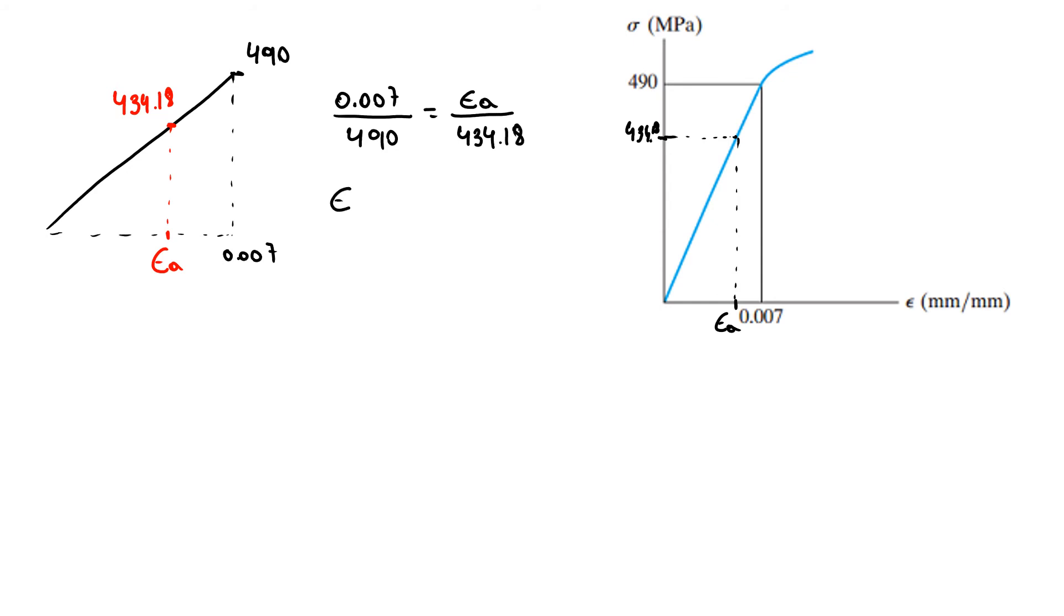So I have my axial strain equals 0.007 times 434.18 over 490. So I have an axial strain equals 0.00620 millimeters over millimeters.